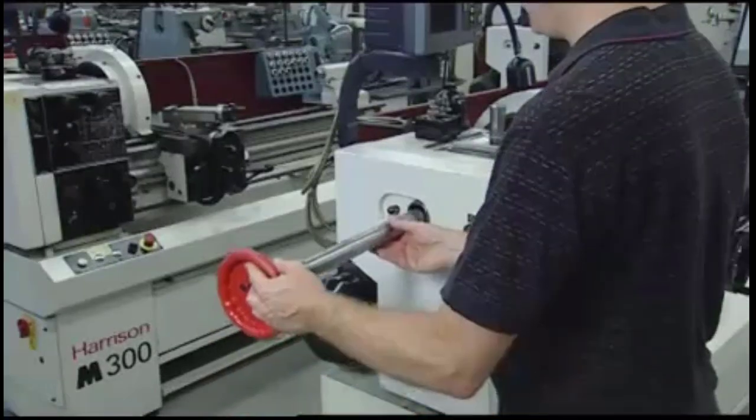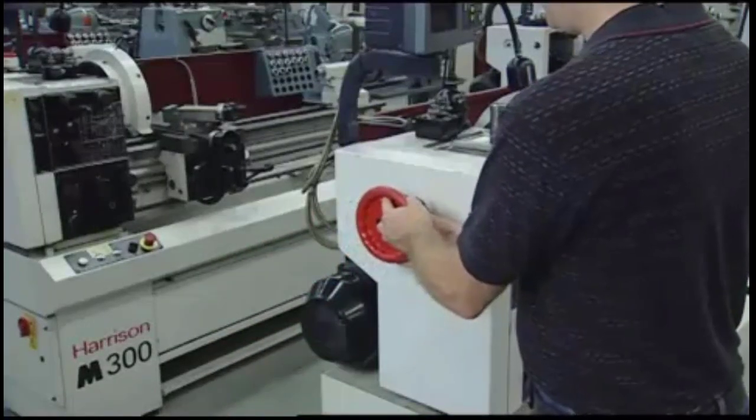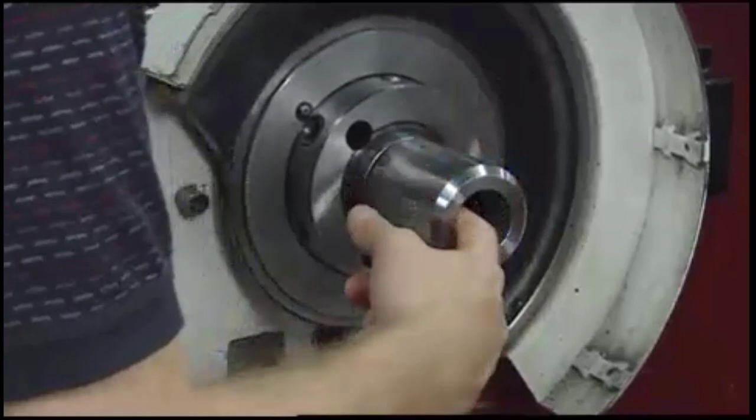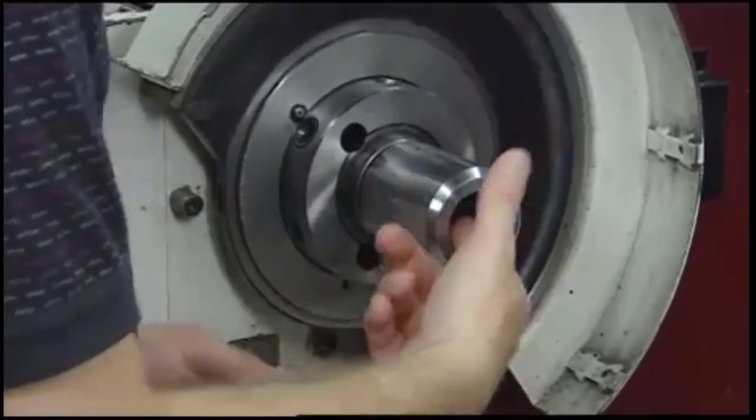Next, insert the draw tube through the spindle from the rear of the headstock. Once that's finished, locate the key, or pin, in the collet adapter.